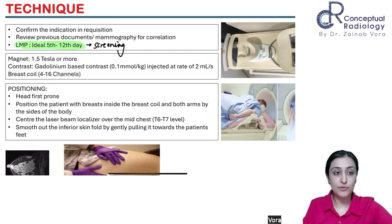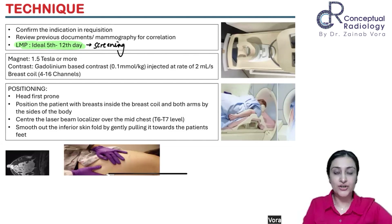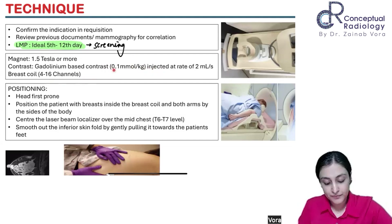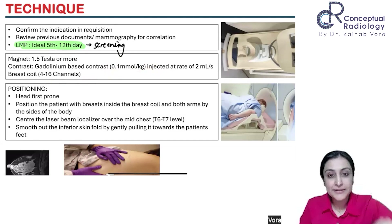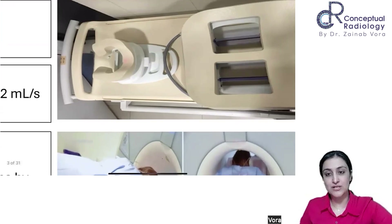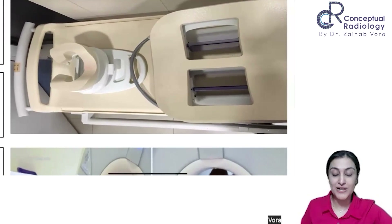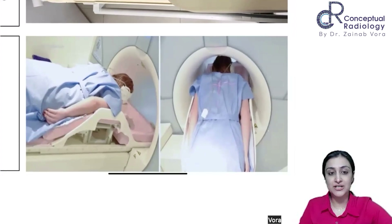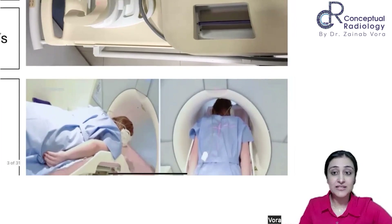For equipment: a magnet of 1.5 Tesla or more is required. Contrast breast MRI is always contrast-enhanced — we never do a non-contrast breast MRI as it doesn't serve any purpose. We use gadolinium-based contrast at a flow rate of 2 ml per second and a normal volume of 0.1 millimole per kg. We use surface breast coils, where the patient lies prone with the breasts hanging in the coils.